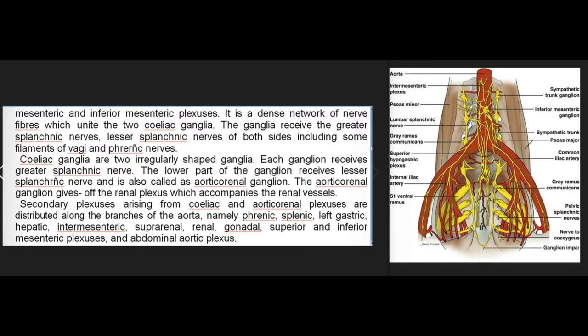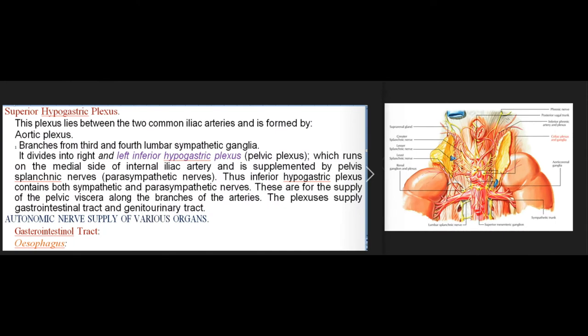Secondary plexuses arising from coeliac and aorticorenal plexuses are distributed along the branches of the aorta: phrenic, splenic, left gastric, hepatic, intermesenteric, suprarenal, renal, gonadal, superior and inferior mesenteric plexuses, and abdominal aortic plexus. Superior hypogastric plexus lies between the two common iliac arteries, formed by the aortic plexus and branches from the 3rd and 4th lumbar sympathetic ganglia. It divides into right and left inferior hypogastric (pelvic) plexuses, supplemented by pelvic splanchnic nerves (parasympathetic). Thus the inferior hypogastric plexus contains both sympathetic and parasympathetic nerves, supplying the pelvic viscera along the branches of the arteries, including the gastrointestinal and genitourinary tracts.